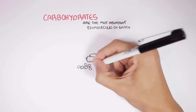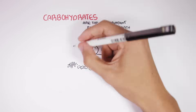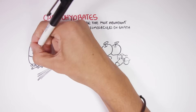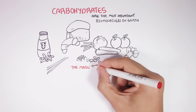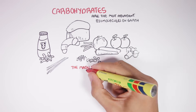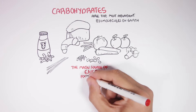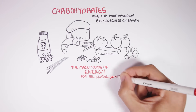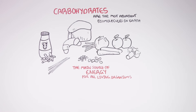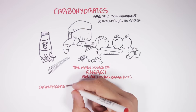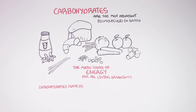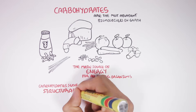Carbohydrates are the most abundant biomolecules on Earth and are found everywhere. They are a major source of energy for all living organisms, such as animals and plants. But they are not only important for energy — carbohydrates also serve as important structural components.